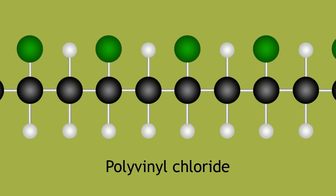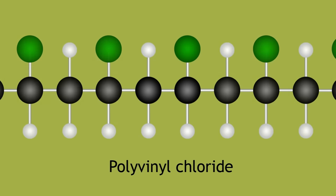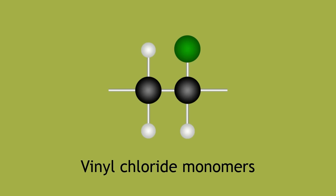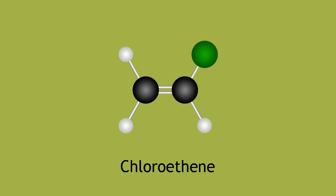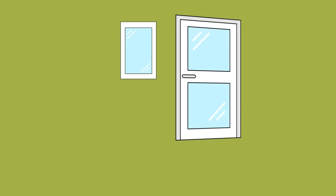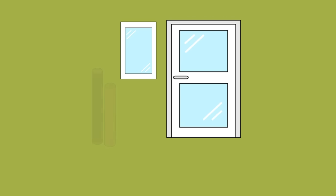Similarly, polyvinyl chloride, or PVC, is a polymer of vinyl chloride monomers. Vinyl chloride is simply the common name for chloroethene. As you may have learned in a previous lesson, PVC can be used to make window and door frames, plastic hinges, and pipes.